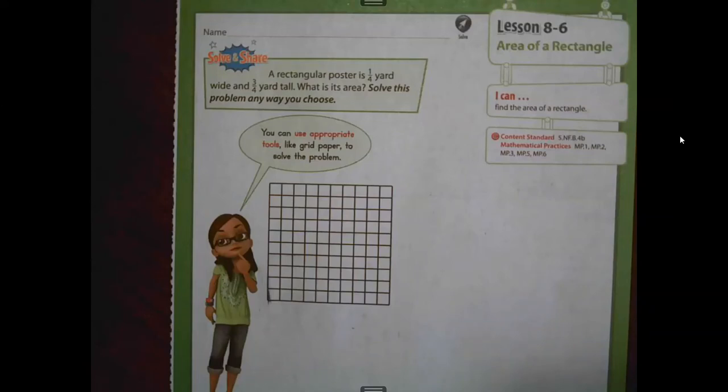Hi boys and girls, it's Ms. Bissell. Today we are working on Lesson 8-6 in Volume 2 of our textbook. We are on page 487 and we are going to look at how can we find the area of a rectangle with fractional side lengths.